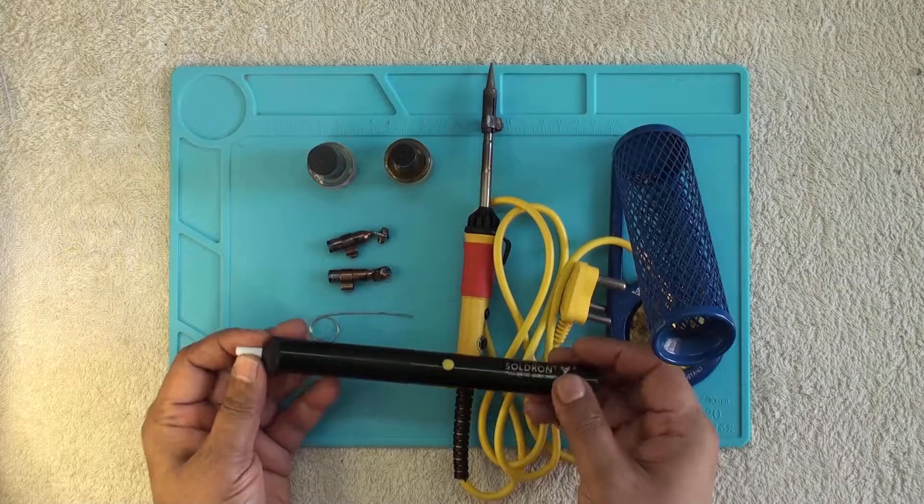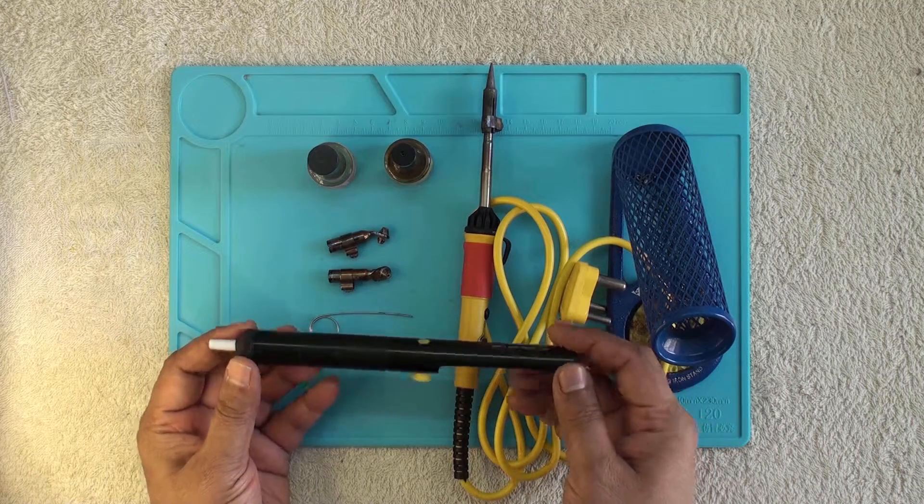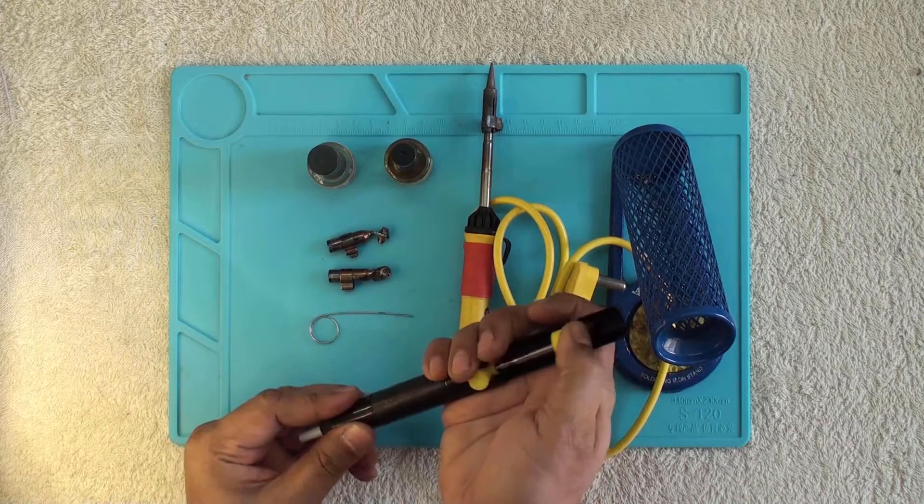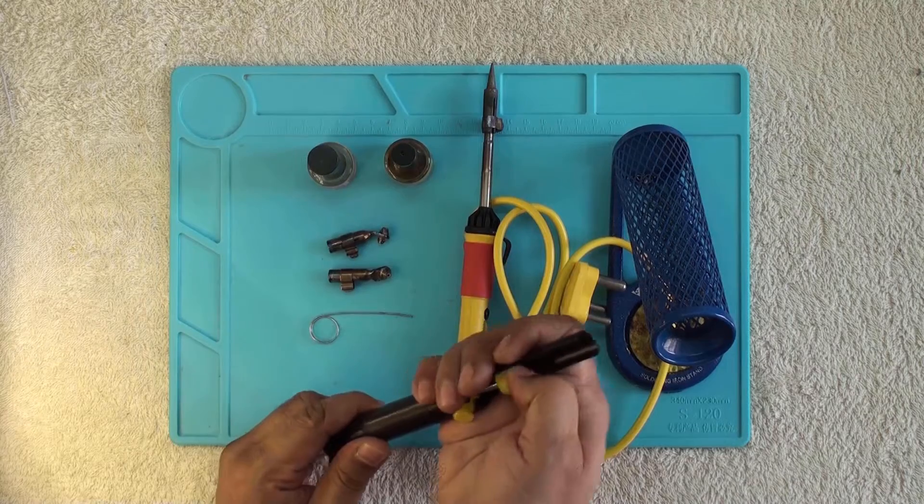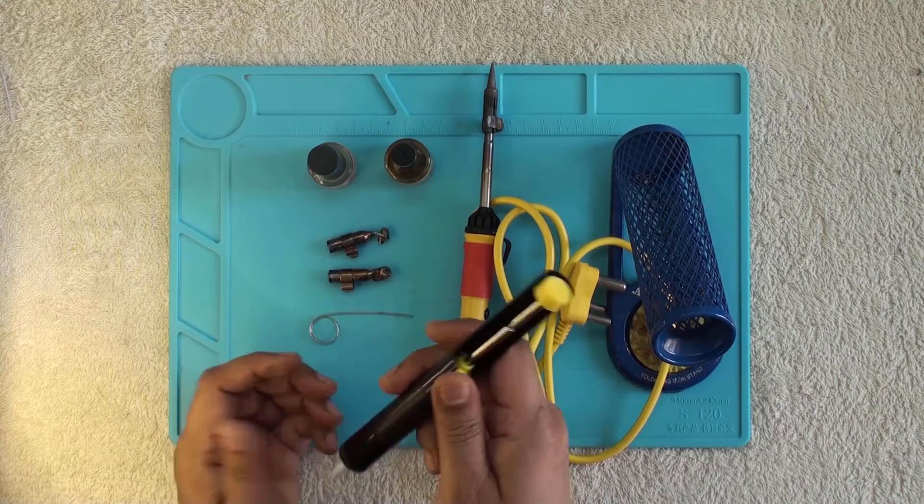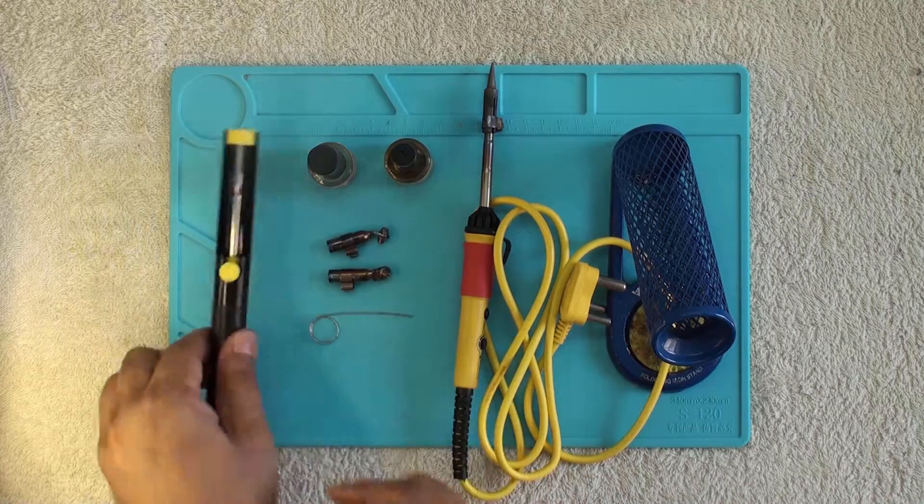This is mechanical de-soldering suction pump. To operate this, push the plunger down till it locks. Then, place the nozzle over the molten solder and press the button to release the plunger to suck in the molten solder.